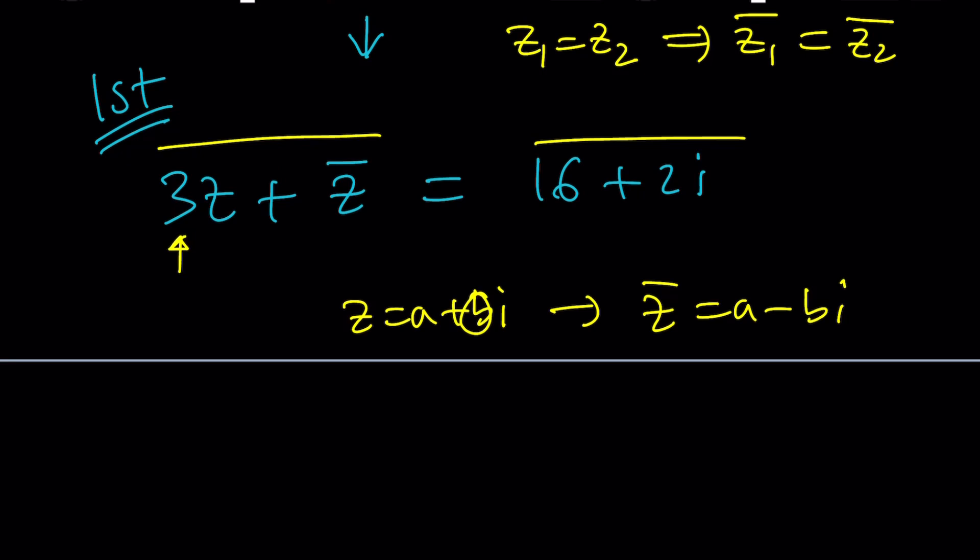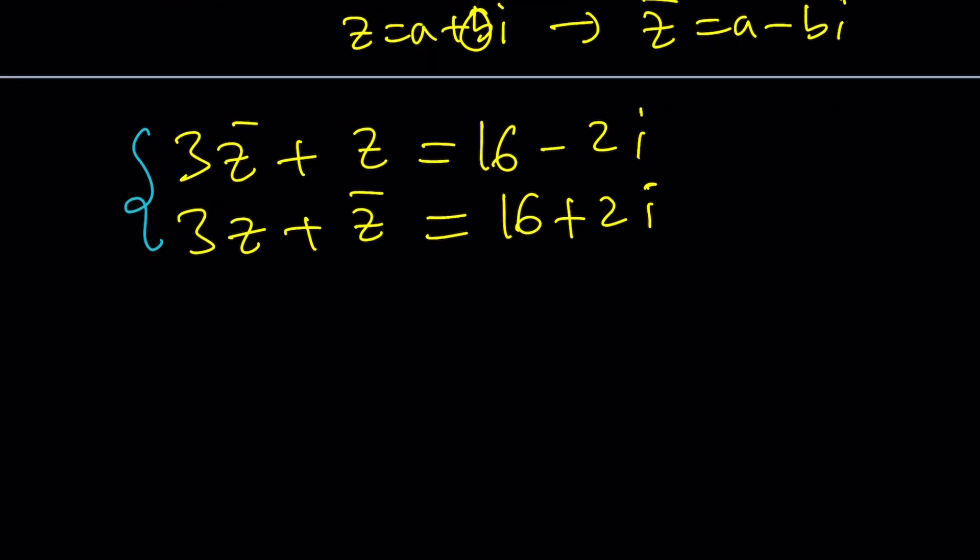So the imaginary part of 3 is 0 because there is no i, so it'll stay as is. When you conjugate this equation it's going to be 3z bar plus z equals, the conjugate of 16 plus 2i is 16 minus 2i. Along with our original equation that we just conjugated, this gives us a system. So we can go ahead and try to solve the system but how? I would say substitution or elimination.